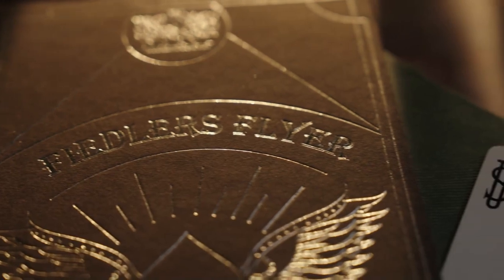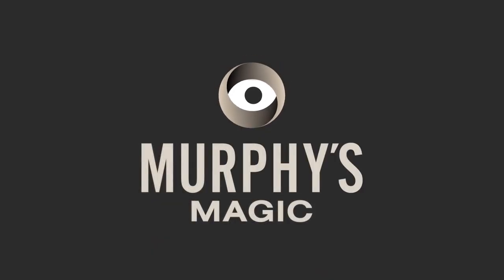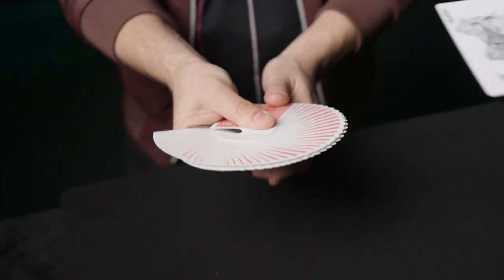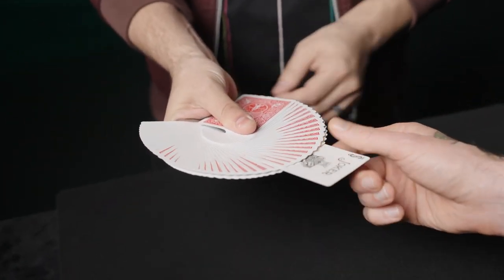Fiedler's Flyer is a secret weapon you can carry with you at all times. Your spectator completely shuffles a normal ungimmicked deck of cards. Next, without any moves or sleight of hand, a random card is selected.